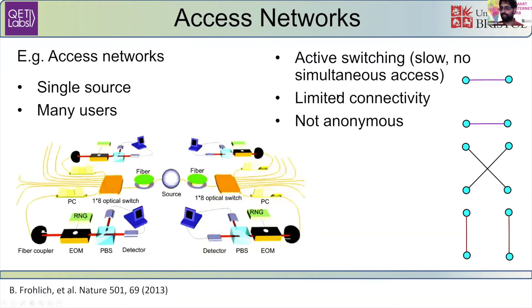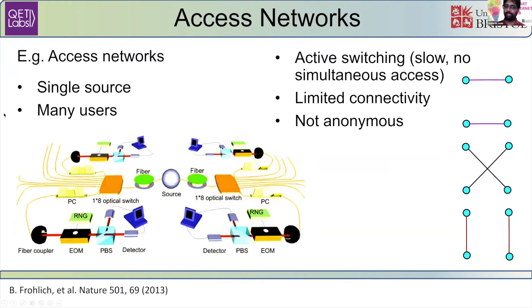Another way around trusted nodes is to have something like an access network. Here you are distributing entanglement, not just prepare and send like the trusted node case. So you can send entanglement between two users and then use optical switches to choose which two users are active at any one given time.